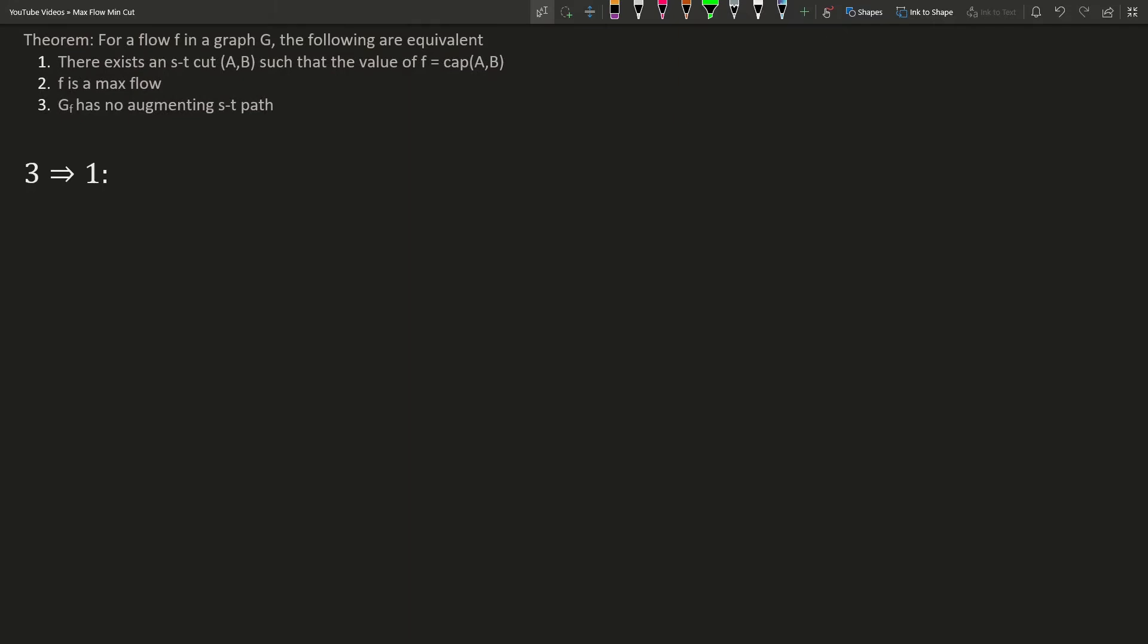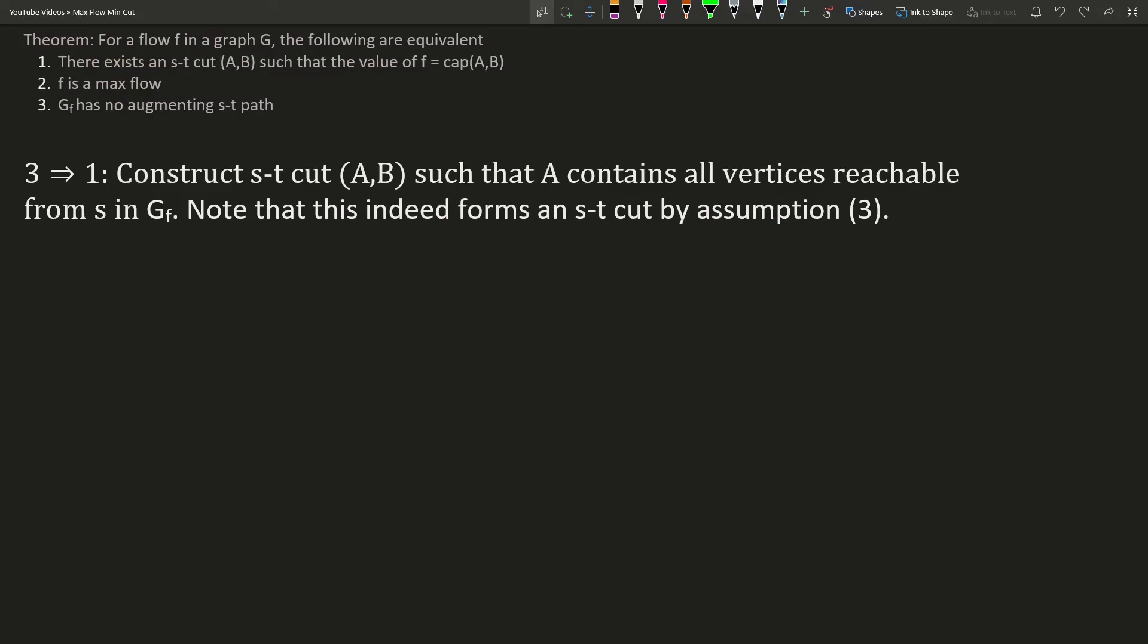For the last implication, we need to show that if the residual graph has no augmenting ST path, then there is an ST cut whose capacity is equal to the value of the flow. We will construct a cut by putting all vertices that are reachable from the source in the residual graph into A, and all other vertices into B. Reachable means that we may only take edges with strictly positive residual capacity, or in other words, we may only take edges that are not fully saturated.